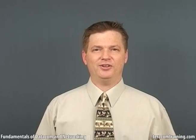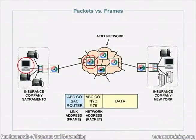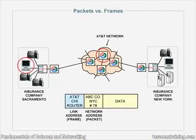The routing software looks at the network address and looks up a routing table. It finds an entry that says: if you want to go anywhere outside this building, it doesn't matter where, you have to go to AT&T's router in Sacramento. So the insurance company's router takes that packet, sticks it in a frame with AT&T's router in Sacramento on the front, and sends it over the access circuit. AT&T's router in Sacramento pulls in the packet, looks at the address — send this to ABC Insurance Company, computer number 78, New York City — and finds in its routing table: to get anywhere in New York City, you have to go to Chicago. So it takes the packet, puts it in a frame, and sends it to the AT&T router in Chicago.